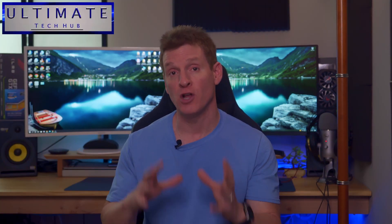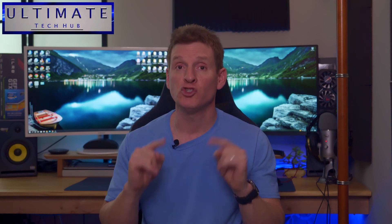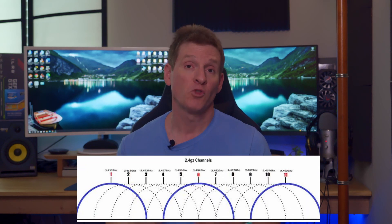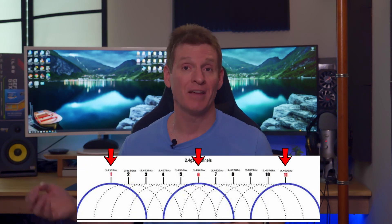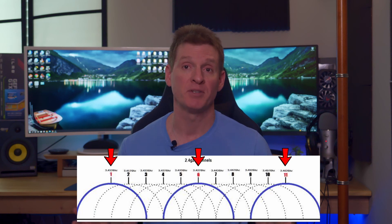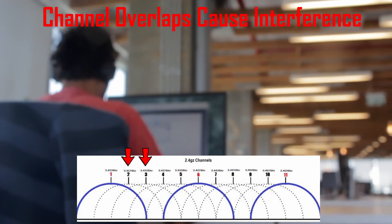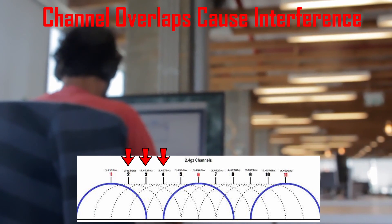There are definitely channels that are faster than others, but don't go and change those channels yet. Your Wi-Fi router has 11 channels. The three best channels are 1, 6, and 11. Any of the channels between those numbers overlap, and these overlaps cause interference. There are two types of interference: co-channel interference and adjacent channel interference.